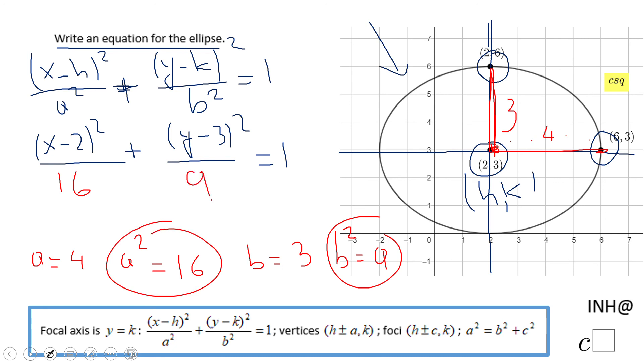And that nine goes here. This is the equation of the ellipse you see on the right side. If you enjoyed this video clip, don't forget to click the like button and come back on C squared for more help. Thank you.